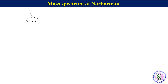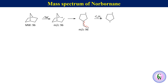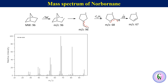Now let's look at the mass spectrum of norbornane, which has a molecular weight of 96. Removal of one electron from a C-C sigma bond gives the molecular ion with m/z 96. After ring opening, it gives a radical cation with the same m/z of 96, which then eliminates an ethylene molecule to generate a radical cation with m/z of 68. Removal of a hydrogen radical from this gives an allyl carbocation with m/z of 67. The mass spectrum shows peaks at m/z 96, 68, and 67, and a peak at m/z 81 resulting from the elimination of a methyl radical.